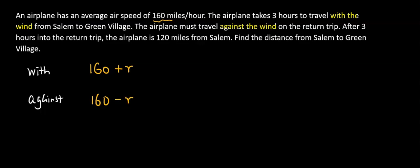And we're going from Salem to Green Village. With the speed we use three hours. Remember distance is time times speed. Let me use the speed since I used r as the wind speed. So the distance from Salem to Green Village is 160 plus r, faster, times time equals distance. We don't know the distance, we just call it d.